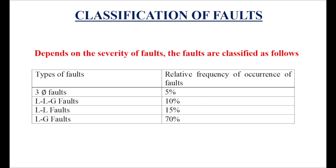Regarding frequency of occurrence: three-phase balanced fault occurs 5% of the time, LLG fault occurs 10%, LL fault occurs 15%, and LG fault occurs 70%. So LG fault has the maximum percentage of occurrence.